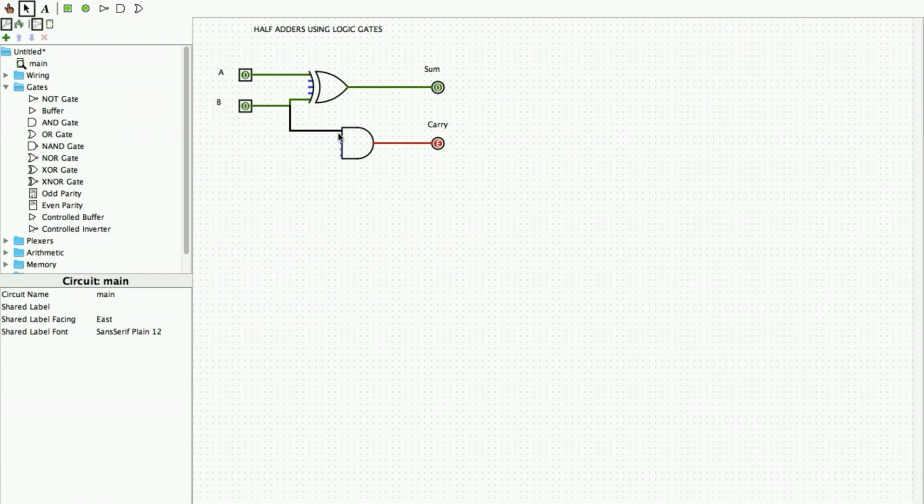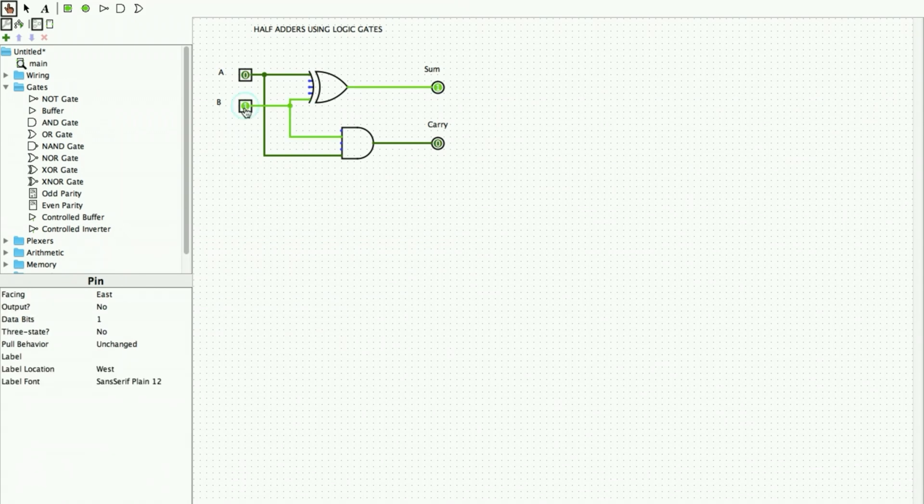The input for this circuit is obtained from here. That's it, my half adder circuit is done. Now I move to the poke tool and I change the input combinations to see if my truth table is verified. One zero - sum is one and carry is zero. One one - my sum is zero and carry is one.